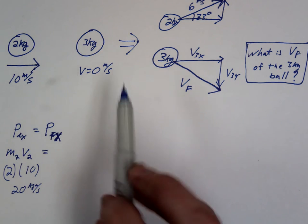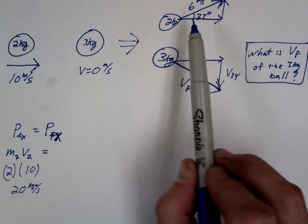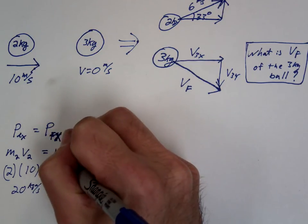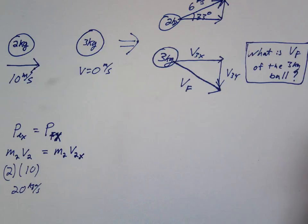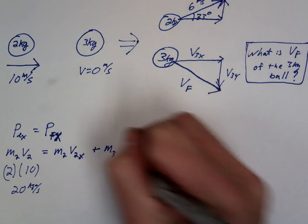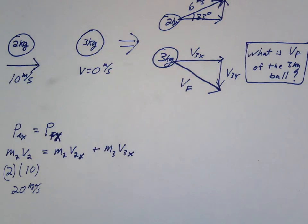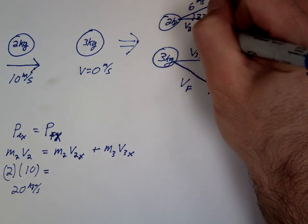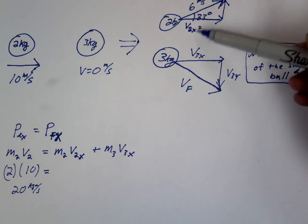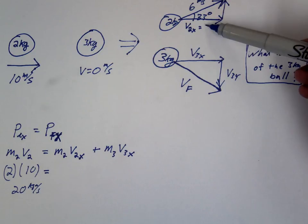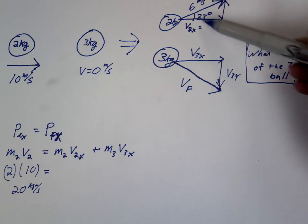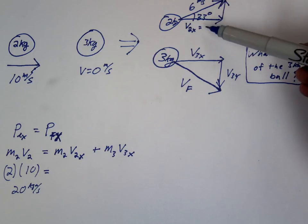The ending momentum — now these 2 balls are moving off at angles, so both of them have a horizontal momentum and you have to include both. So you write the mass of ball 2 times the velocity of ball 2 in the x-direction, plus the mass of ball 3 times the velocity of ball 3 in the x-direction. How do we get v2 in the x-direction? 6 cosine 33 — so this velocity is going to be 6 times the cosine of 33, like we've done many many times.